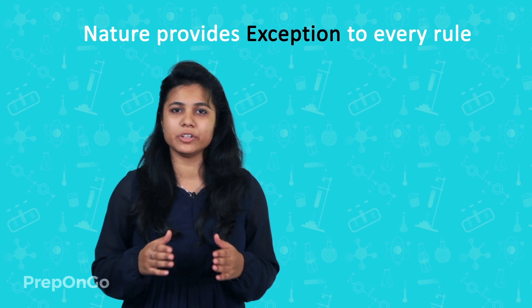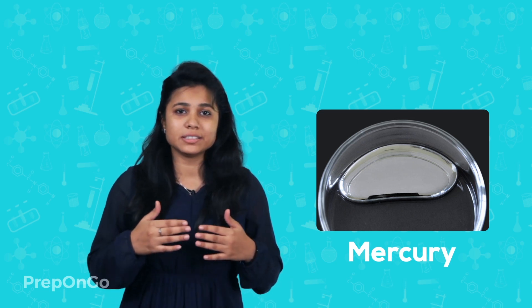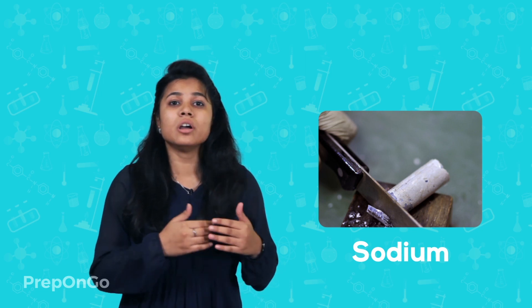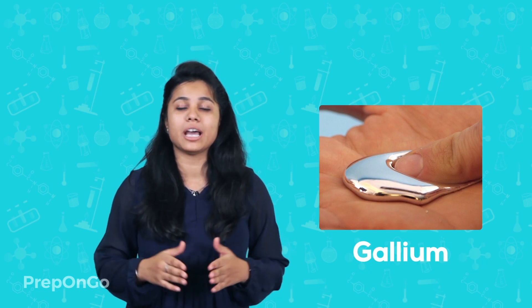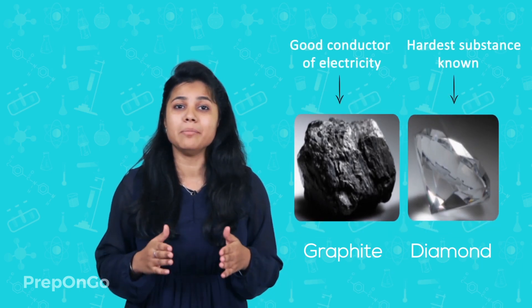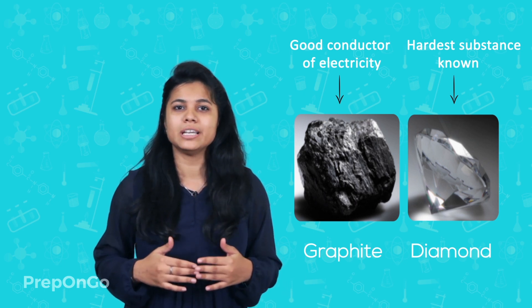Now, while metals and nonmetals generally follow their physical properties strictly, there are some rule breakers. Nature provides exceptions to every rule. As discussed, metals are generally hard at room temperature, but mercury is liquid at room temperature. Also, alkali metals such as sodium, potassium, and lithium can easily be cut with a knife. Metals generally have high melting points, but gallium and caesium have such low melting points that they can even melt on your palms. Iodine, which is a nonmetal, is lustrous. Carbon, also a nonmetal, has two allotropes — diamond and graphite. Diamond is the hardest substance known and has a high melting point, while graphite is a good conductor of electricity and is used in making electrodes.